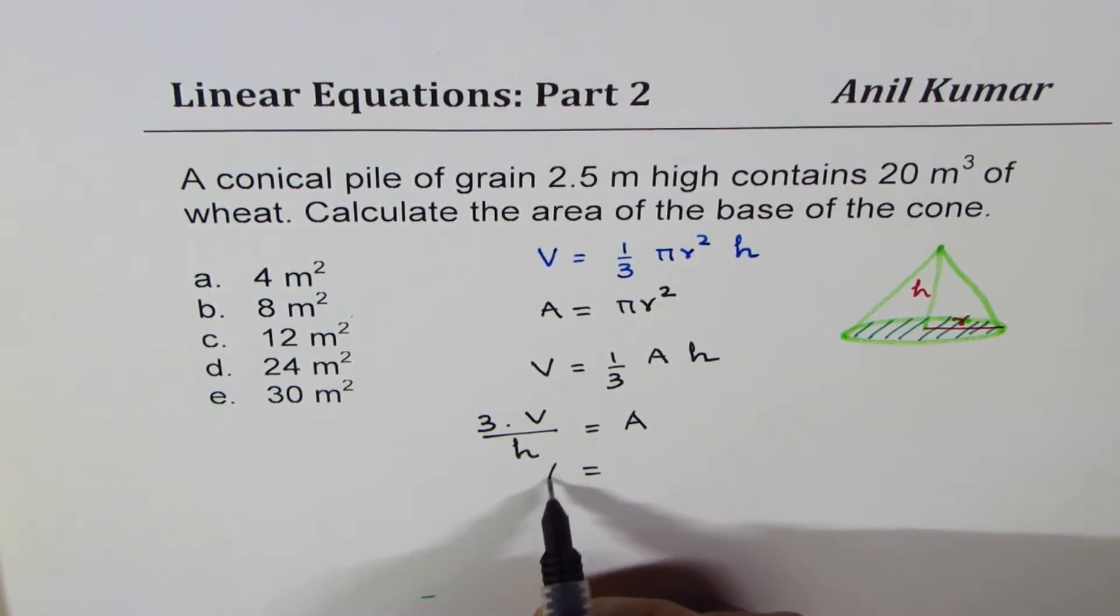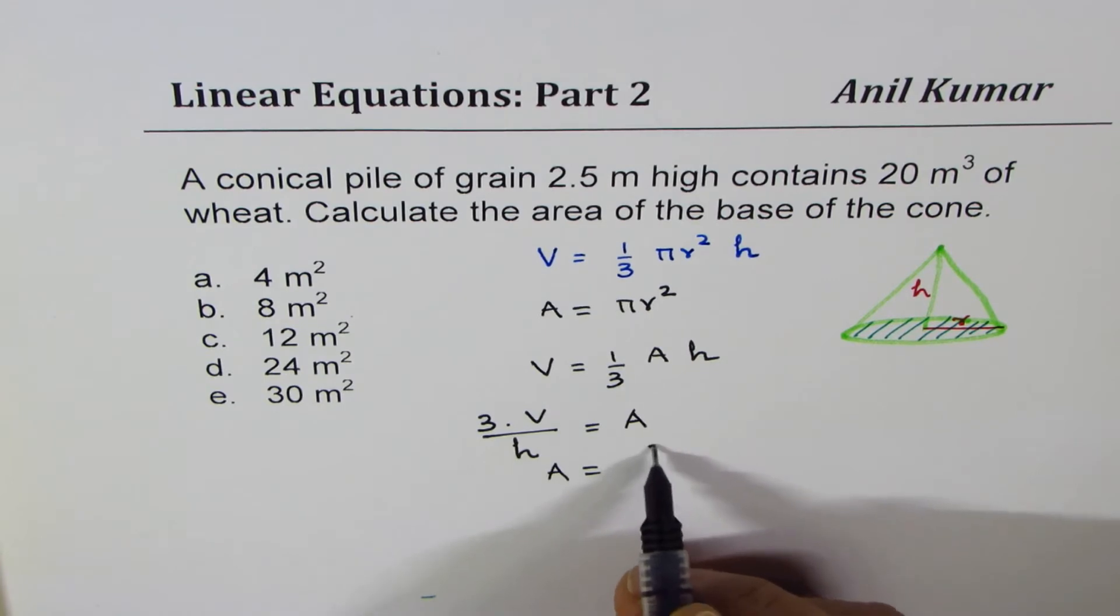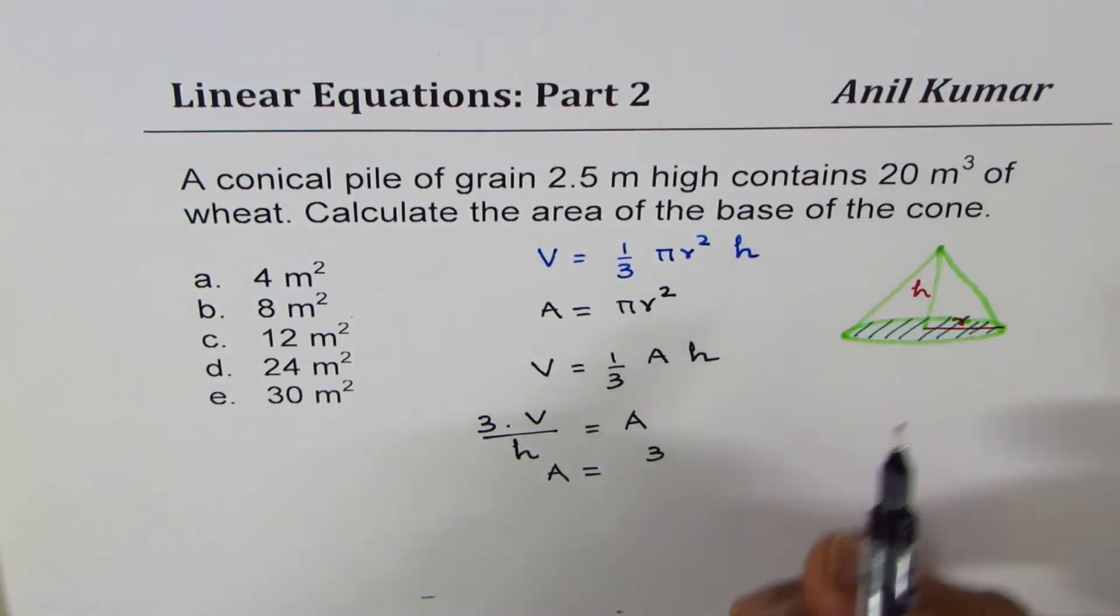So area equals 3 times the volume, which is 20 cubic meters,